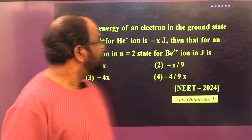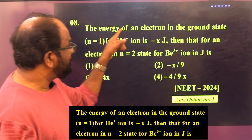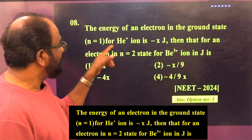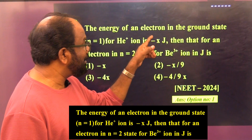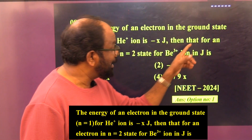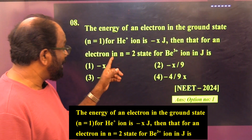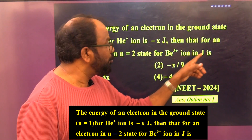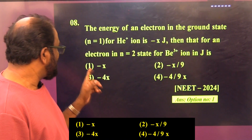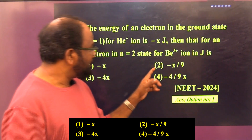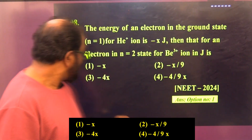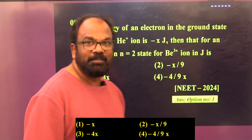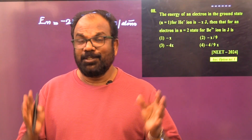Question number eight: The energy of an electron in the ground state (n = 1) for the helium plus ion is −x joule. Then the energy for an electron in n = 2 state for the beryllium 3+ ion in joules is — Option 1: −x; Option 2: −x/9; Option 3: −4x; Option 4: −4x/9.